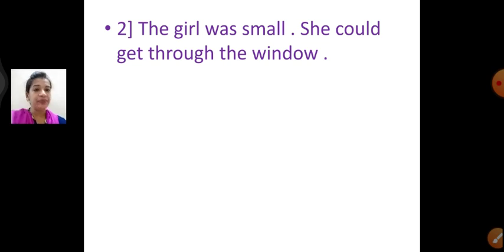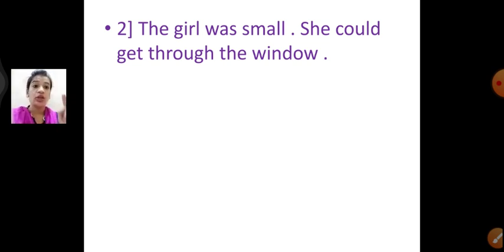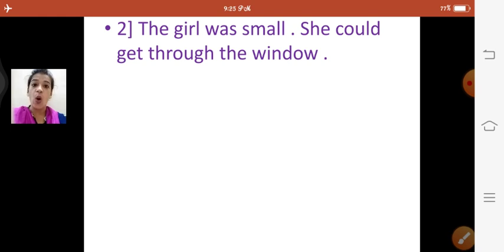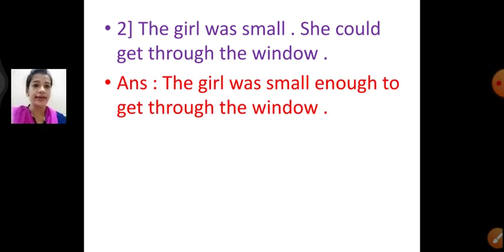Now the second one: 'The girl was small. She could get through the window.' Again I am not going to use a full stop, not going to use 'she', and not going to use 'could'. So the answer is: 'The girl was small enough to get through the window.'